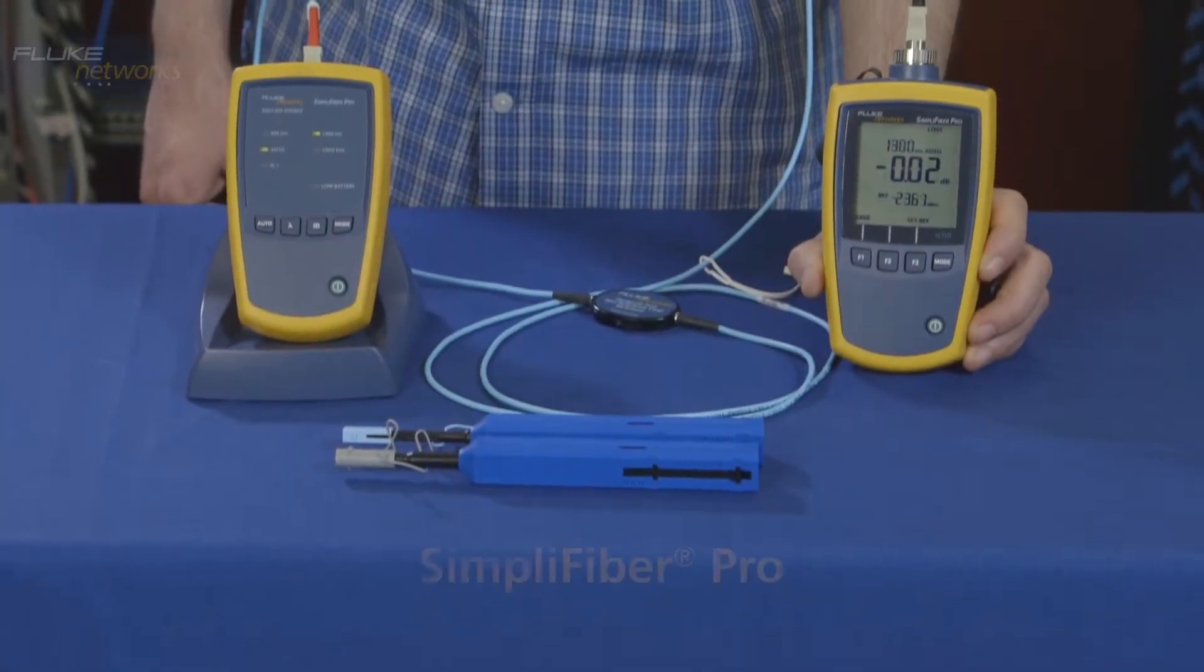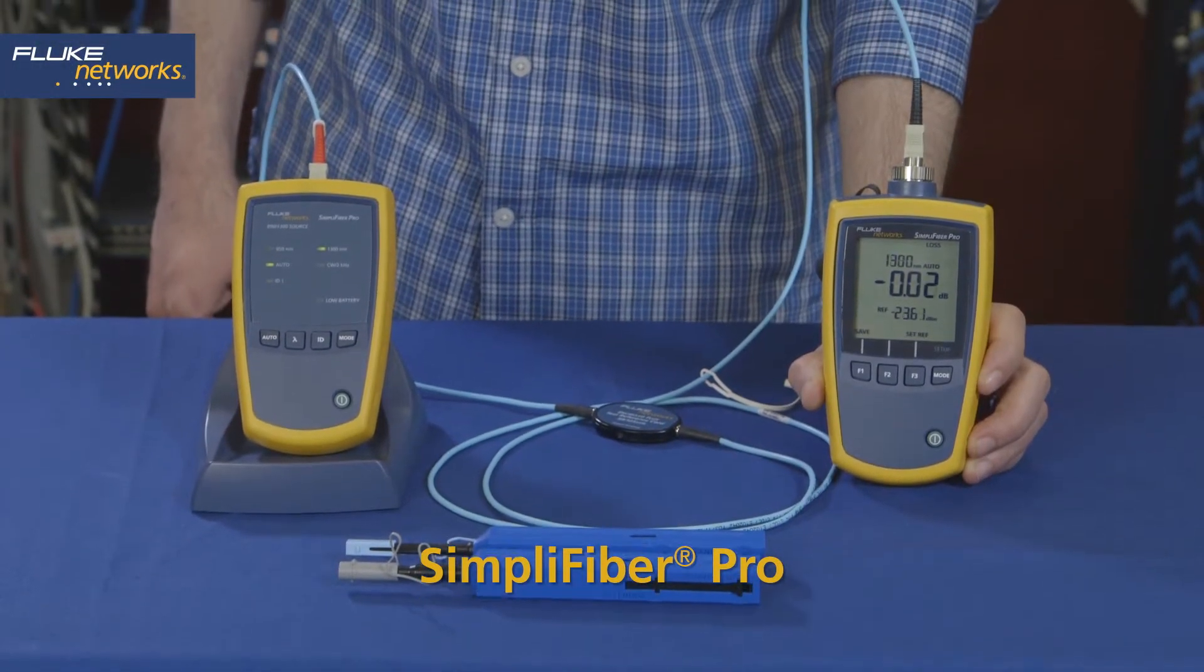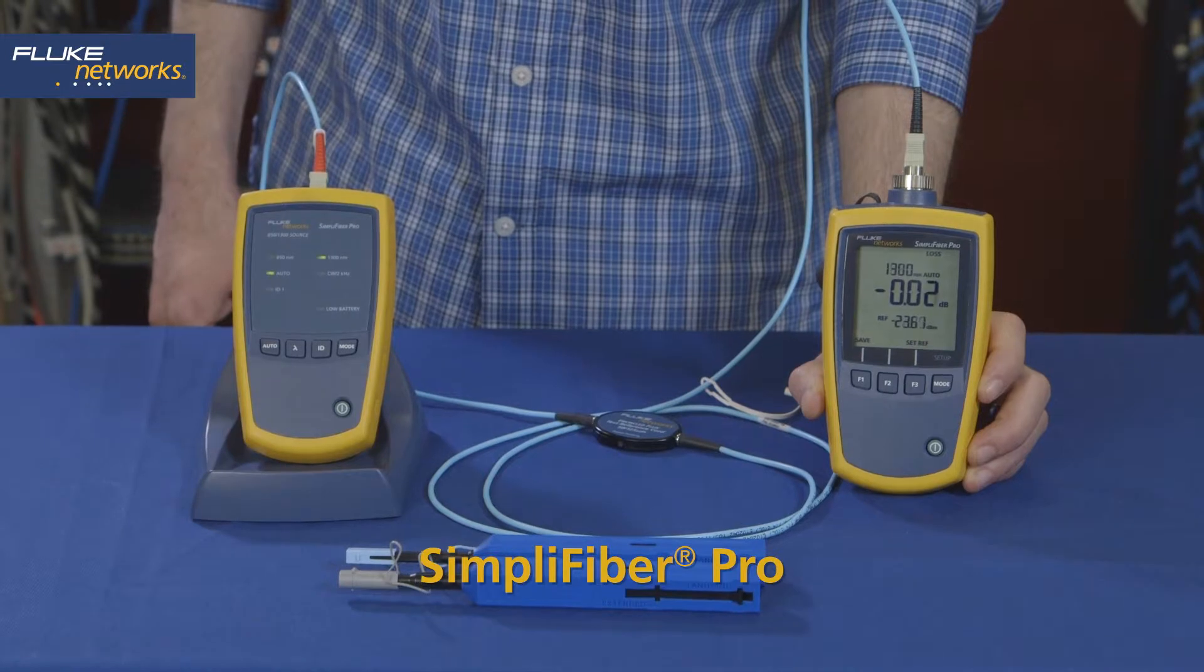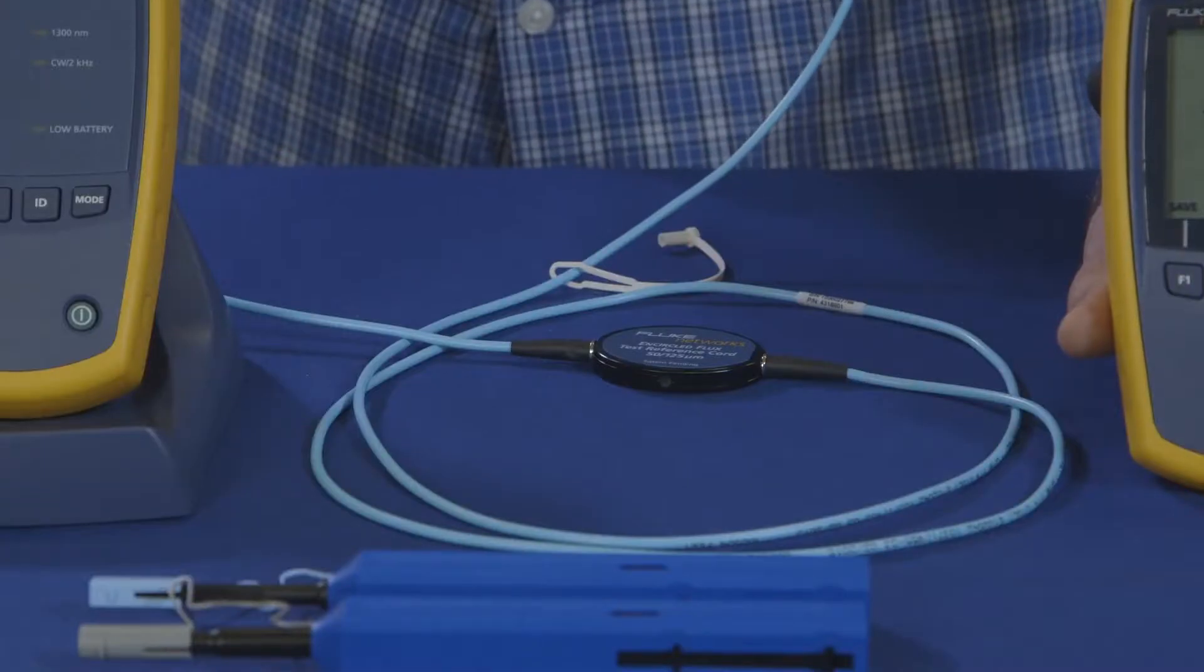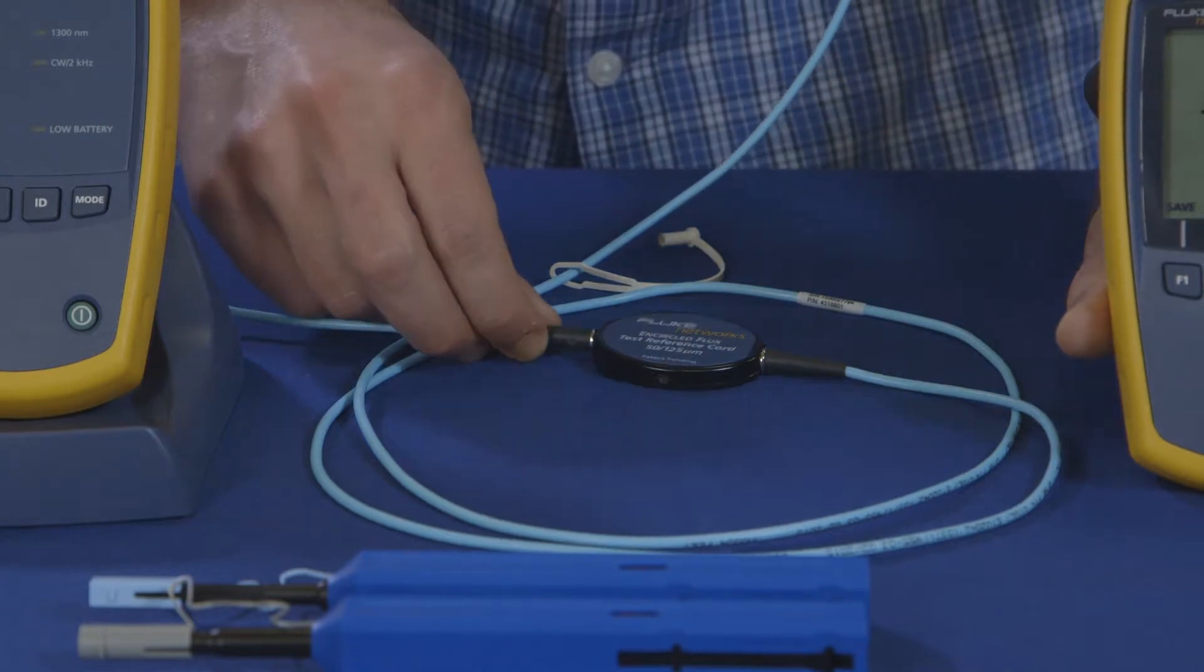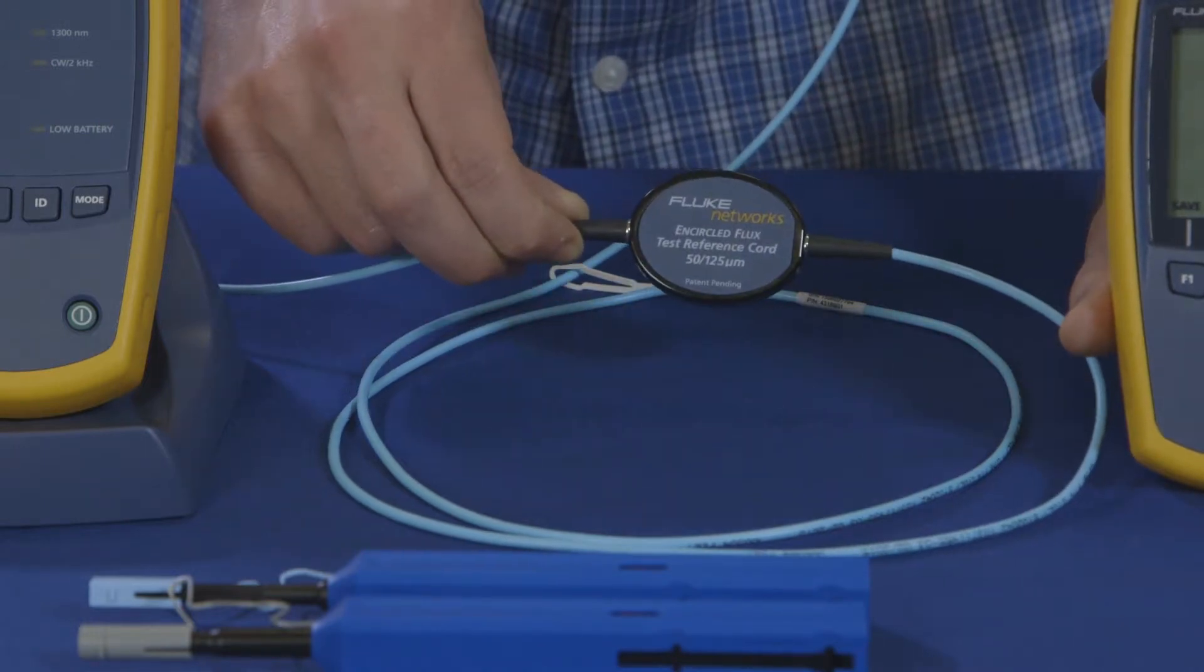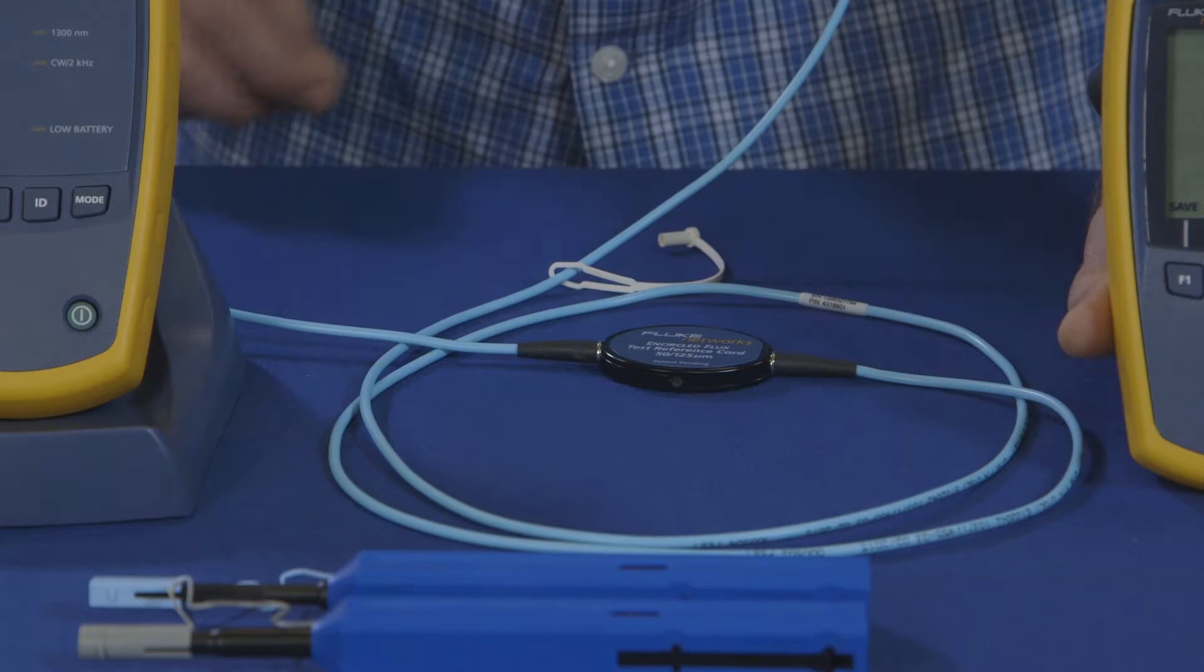We're going to show you how to use the Fluke Network SimpliFiber Pro to take a loss measurement. We'll use our SC interchangeable adapter and our multimode encircled flux test reference cords or TRCs which we've already cleaned and inspected.